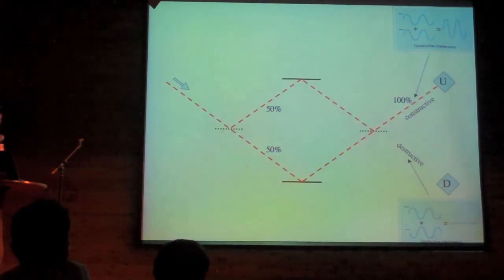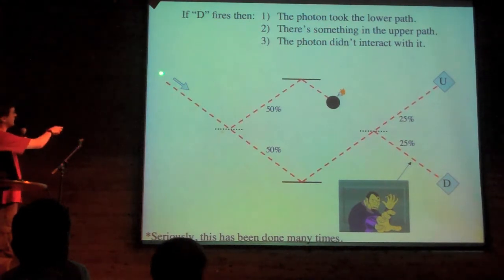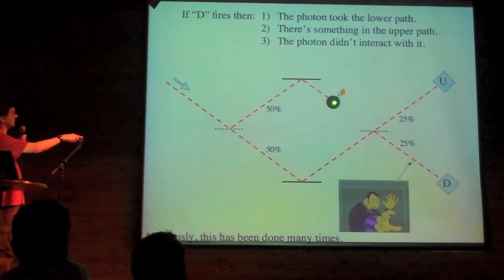Here's where it's weird. I block the upper path with something, I don't care what it is. Half the time, the photon is going to come down here, end up here and stop.